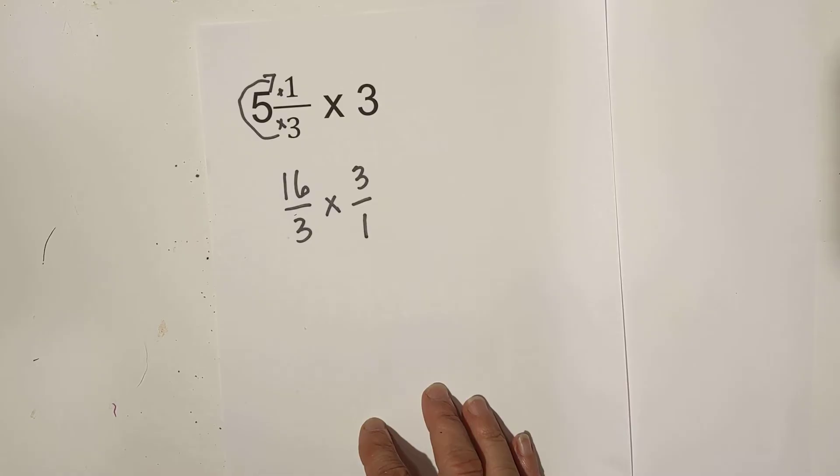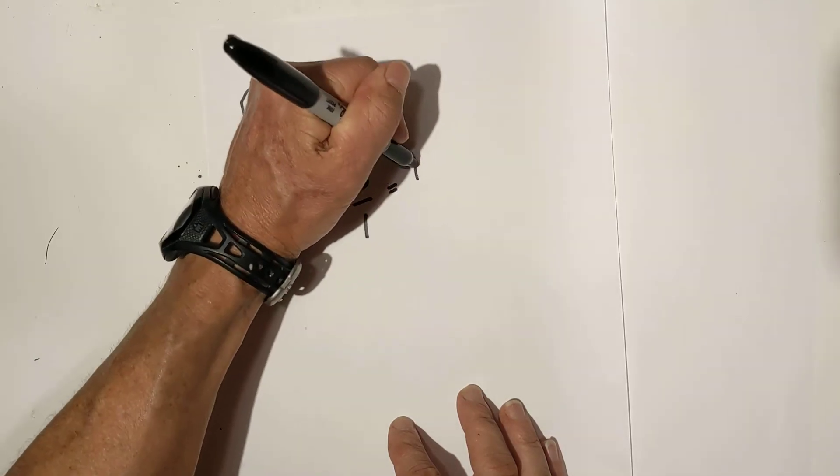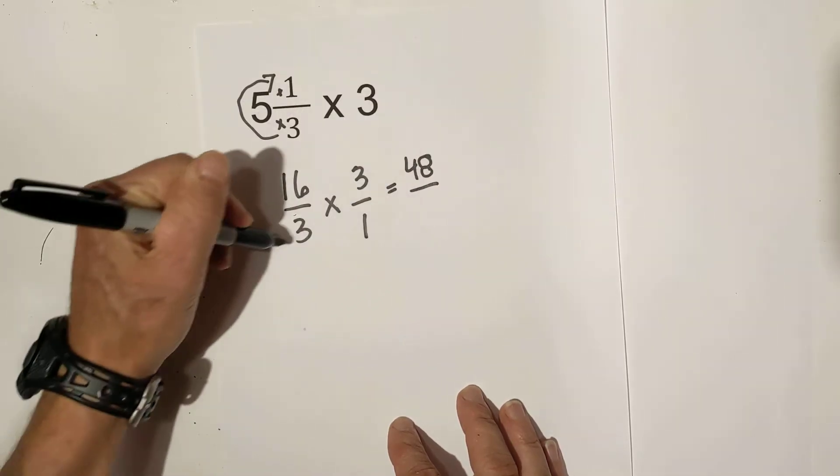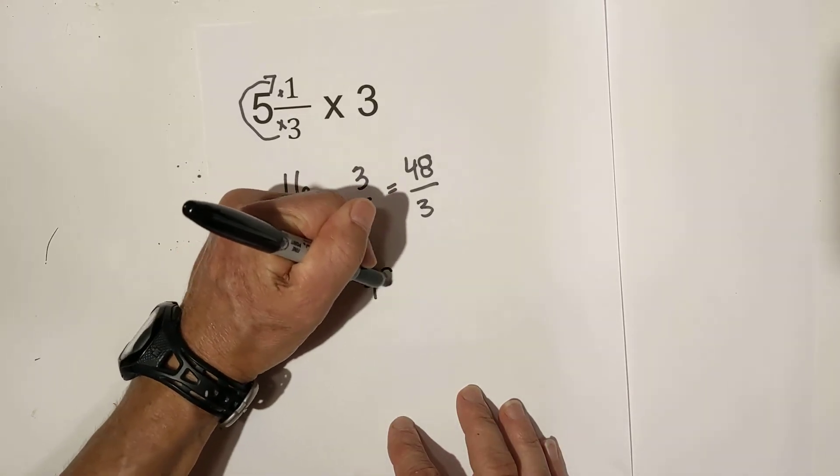So now let's just multiply. 16 times 3 is 48. And 3 times 1 is 3. Now let's convert it to another mixed number.